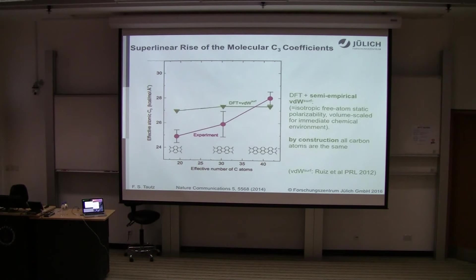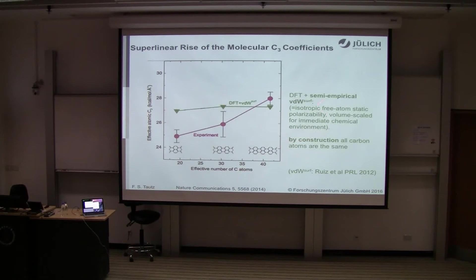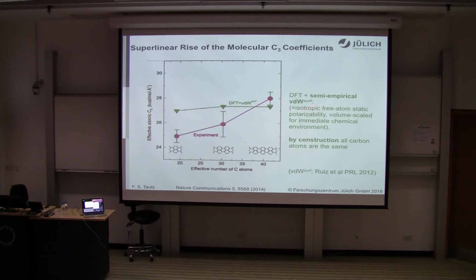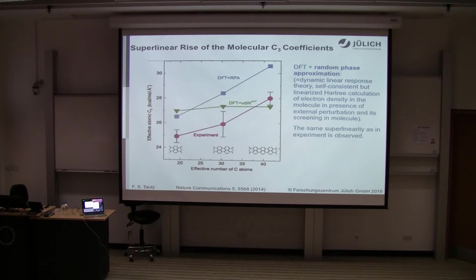We compare with theory. Using the DFT plus empirical van der Waals scheme developed by Alex Tkatchenko and co-workers, we find the overall size of the coefficients is in very good agreement. However, by construction of this theory, the C3 coefficients should all be roughly the same for different molecules, since it starts from isotropic free-atom static polarizability scaled only for the immediate chemical environment. We get better comparison using DFT combined with the random phase approximation, where we find very nice agreement with the predicted superlinearity.